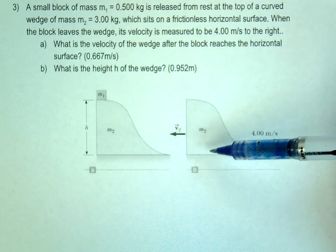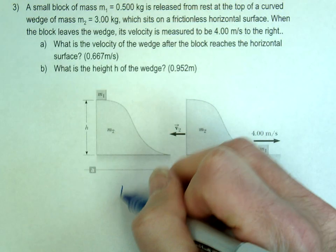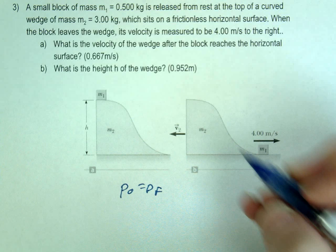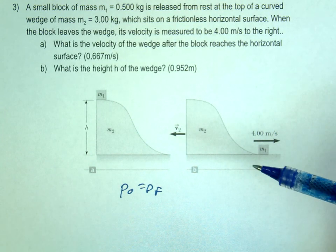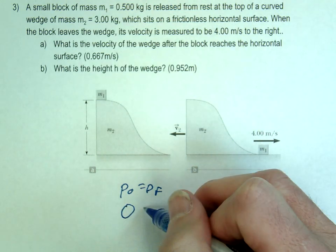For this one, we're just going to use conservation of momentum to solve this one. So you'll set up your p initial equals p final. So what's the initial momentum in this problem if nothing's moving? Zero. Nothing's moving, so that's just going to be zero.